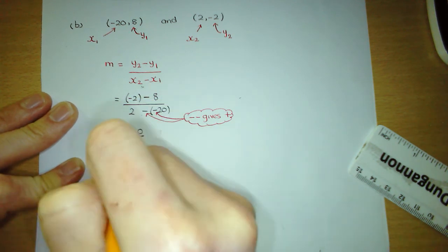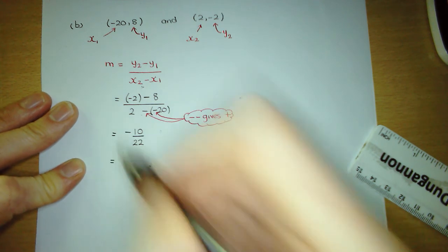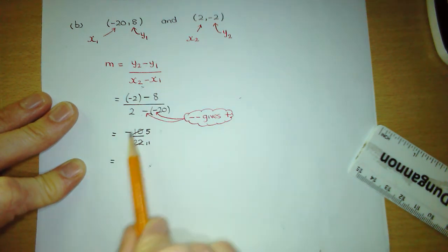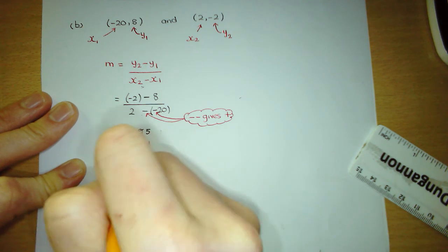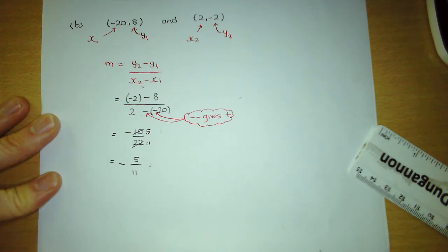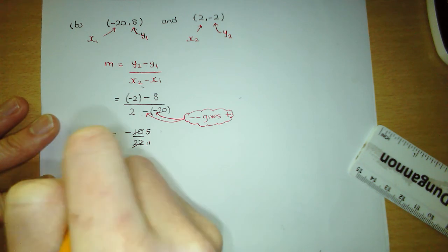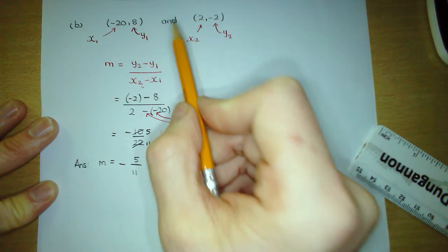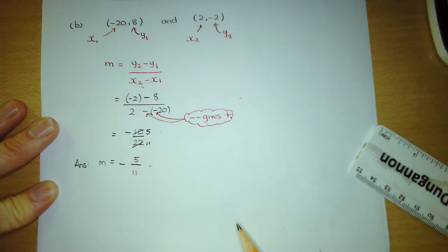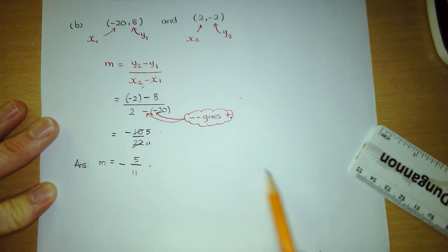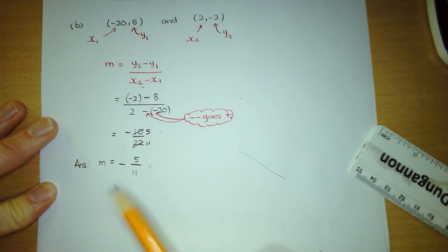We need to cancel the fraction. The largest number that goes into 10 and 22 is 2, so divide both by 2: we get 5 and 11. We also sort out the sign — dividing a minus by a positive gives a negative answer. So the gradient is negative 5 over 11. Because the gradient is negative, even without sketching the line, we know it slopes down. The value is only 5 over 11, so it wouldn't be that steep. Check that you got the same answer using the sketch method in the previous lesson — and we did.